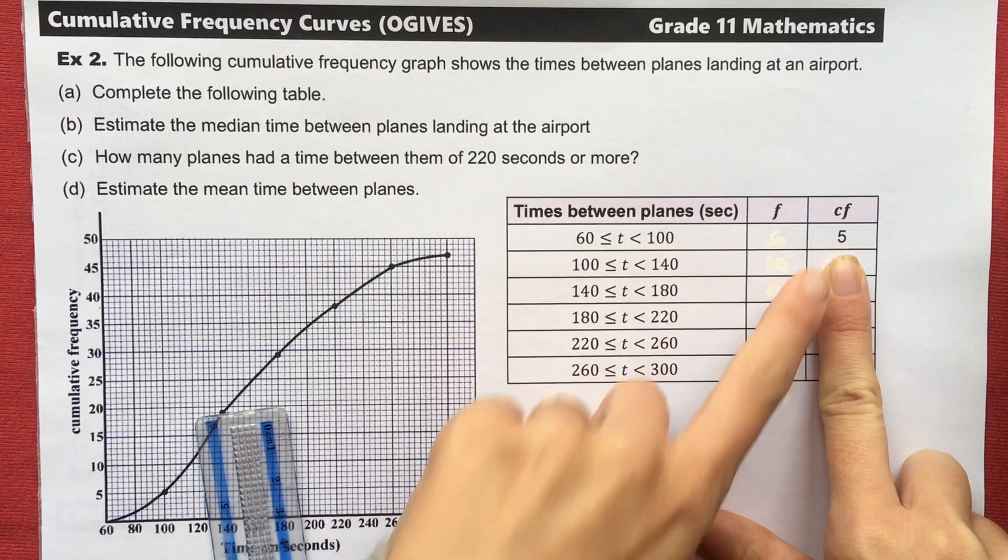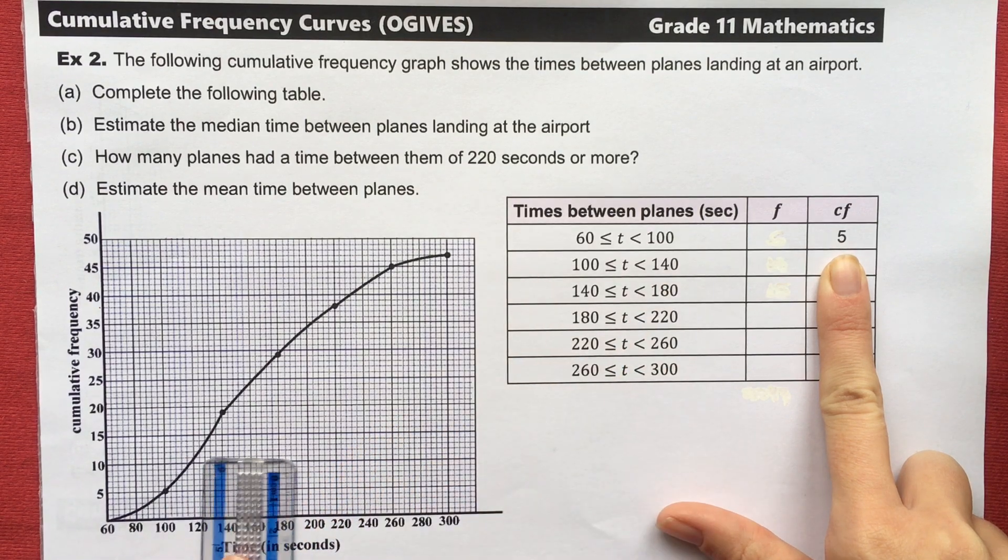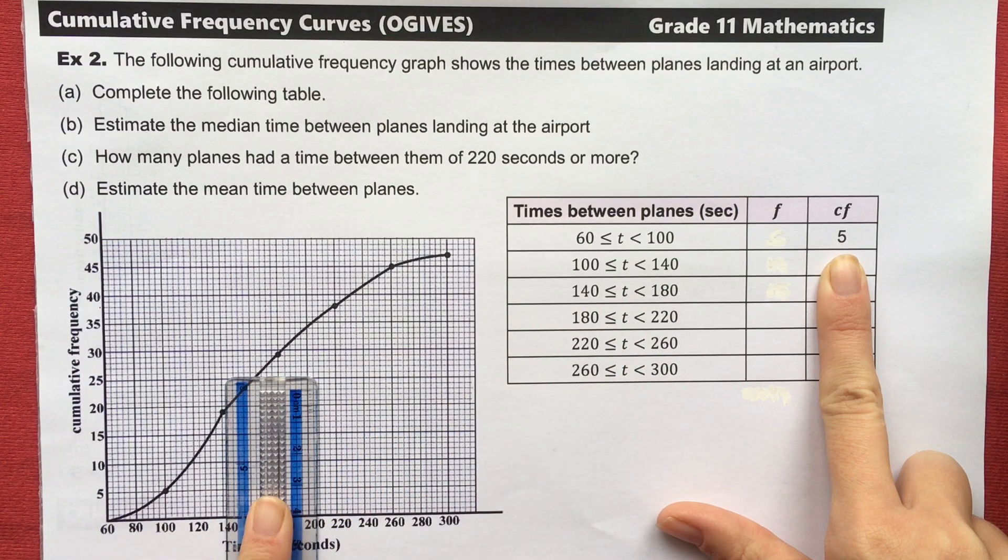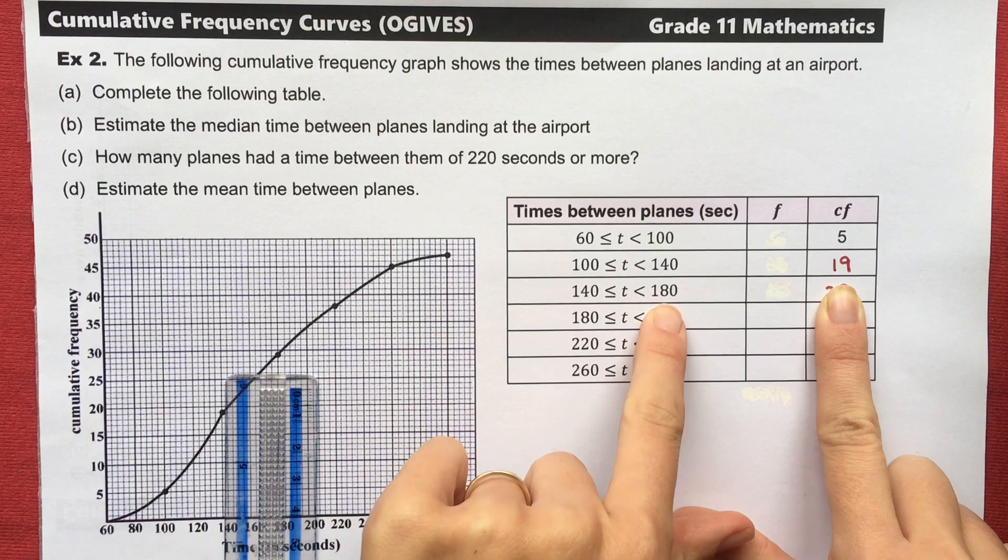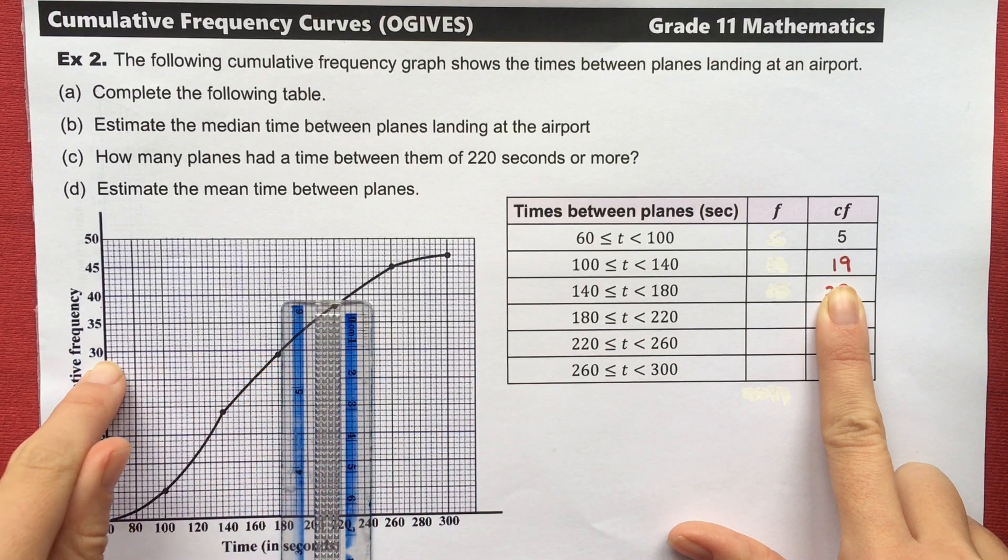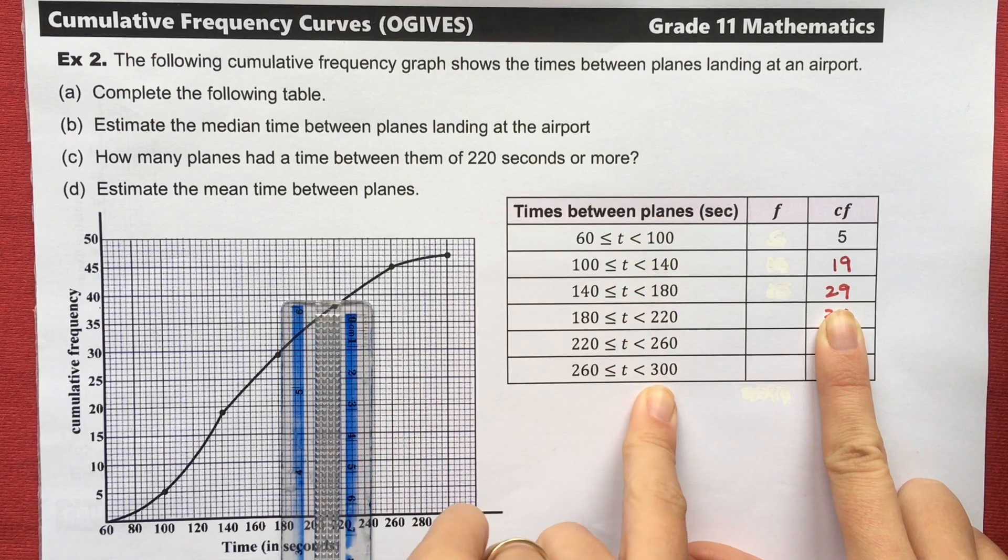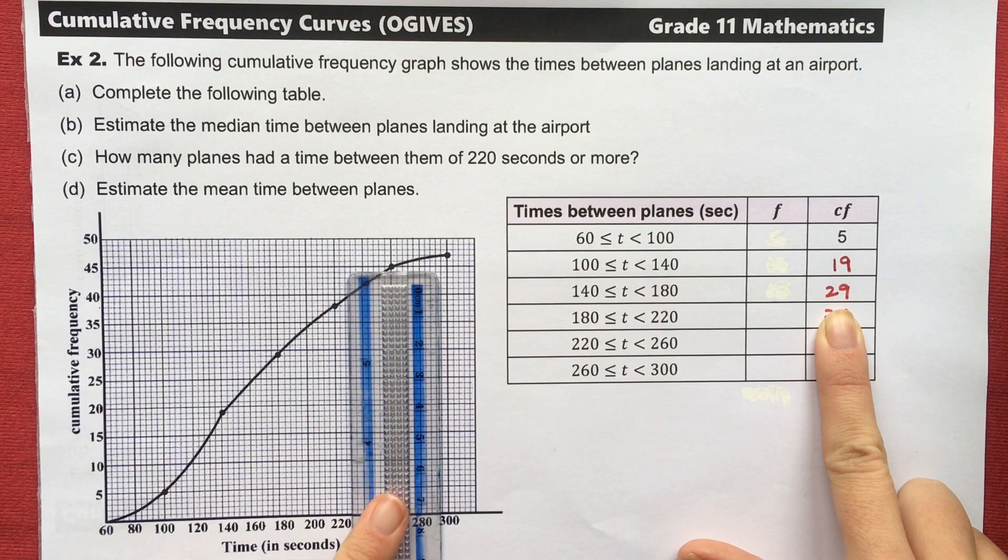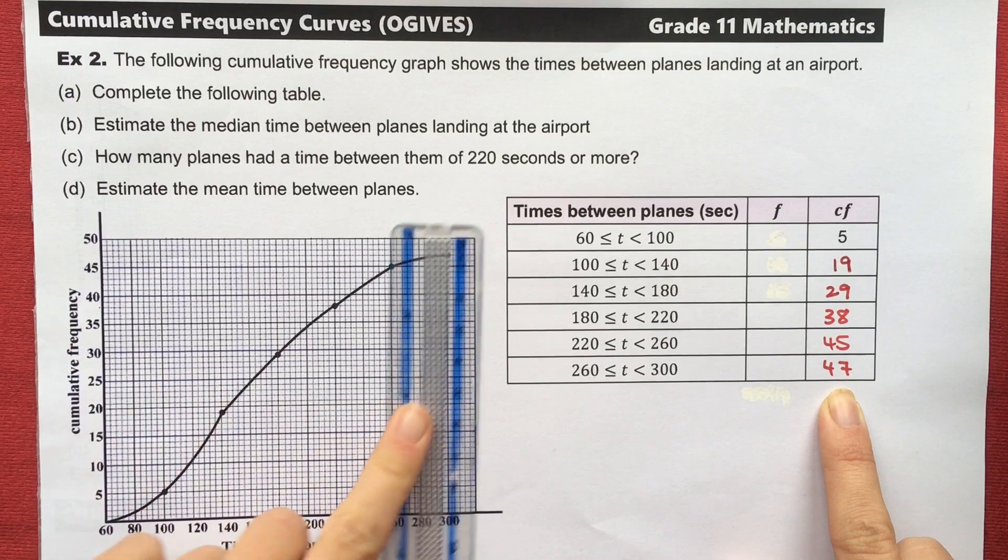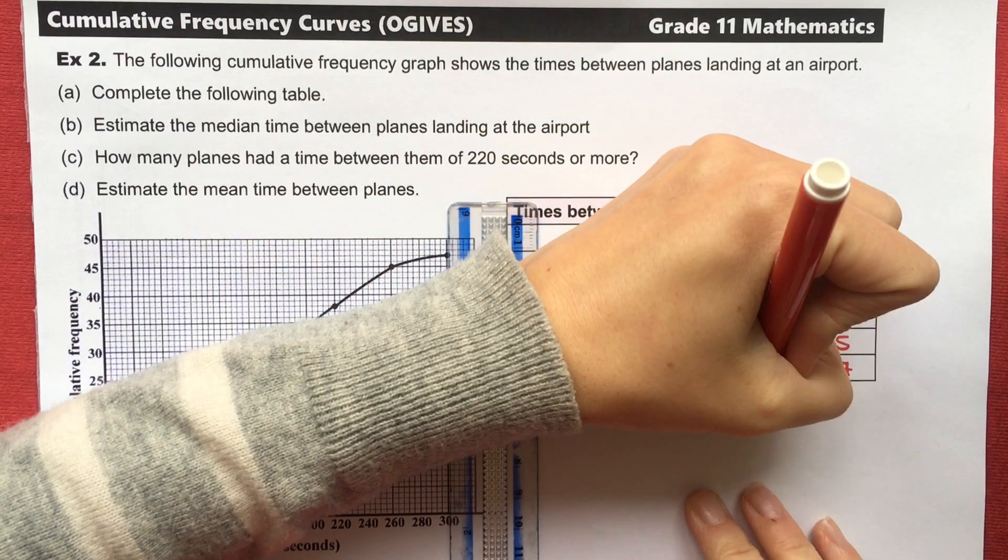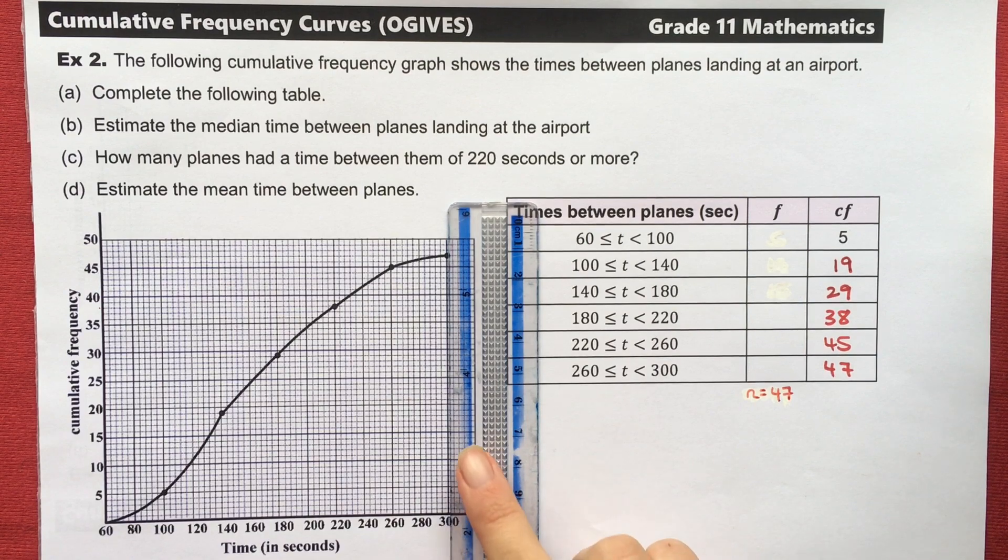They've already given us the coordinate at 100 is 5. And I can see that at 10, 5 planes have landed. I then go to 140. So reading from the graph, at 140, I'm at 19 planes. 180, I'm at 29 planes. And if you're not sure why I'm using this upper boundary, then you need to watch Mr. Wu's video again. At 220, I'm at 38. And you can see how I got the rest. So there are 47 total planes, which means that my n, or whatever my frequency adds up to, needs to add up to 47. So let's double check and make sure that's the case.